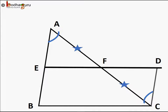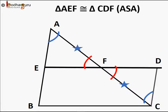Angle FAE is equal to angle FCD because alternate angles are equal, and vertically opposite angles AFE and CFD are also equal. Hence, triangle AEF and triangle CDF are congruent by the ASA rule.